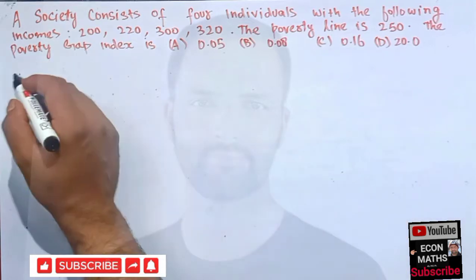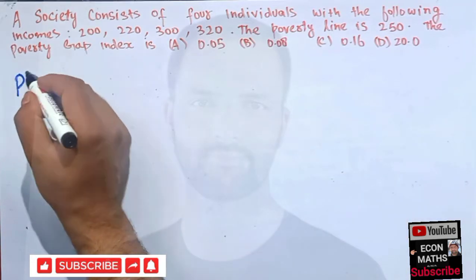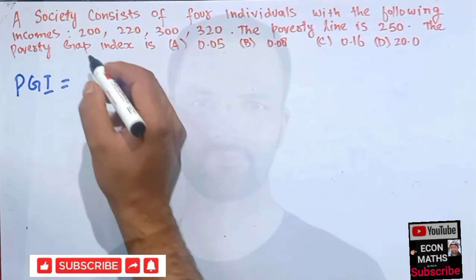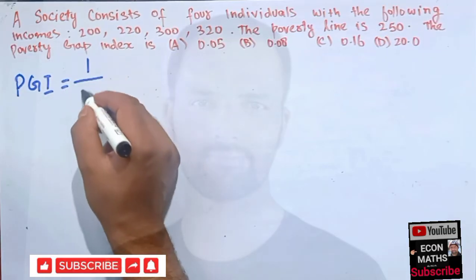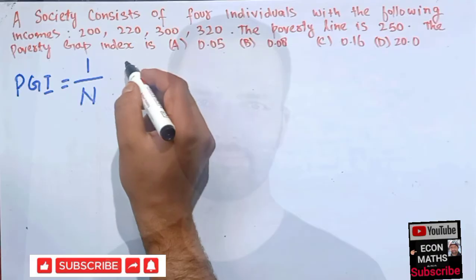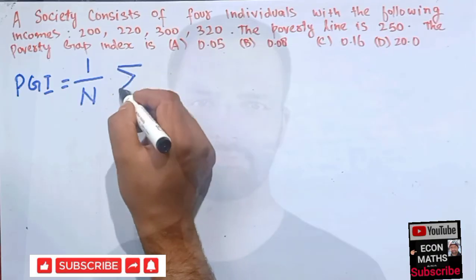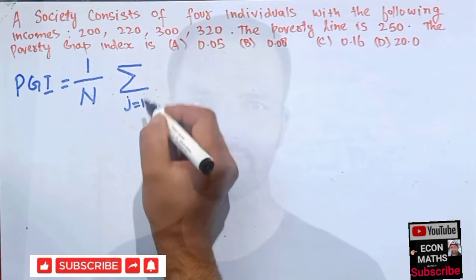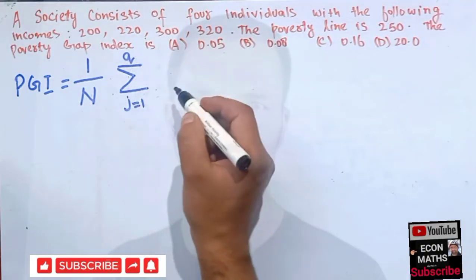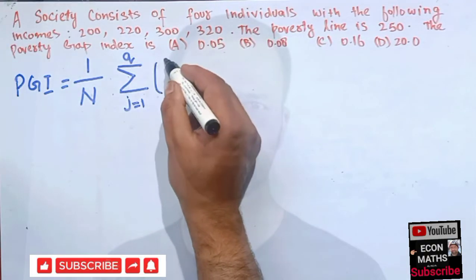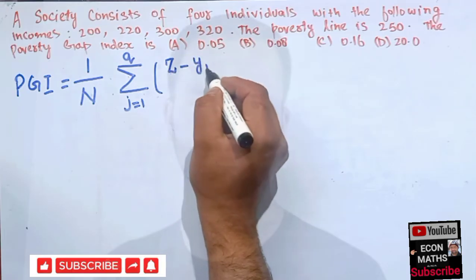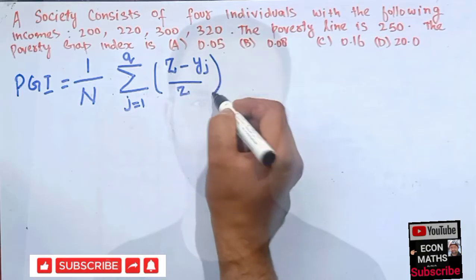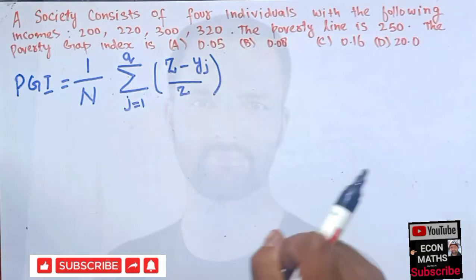The formula for the poverty gap index is: PGI = (1/n) multiplied by the summation from j equals 1 to q of (z minus y_j) divided by z. This is the formula for the poverty gap index.